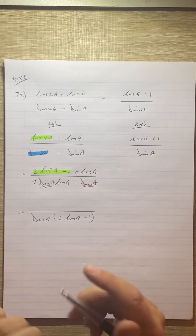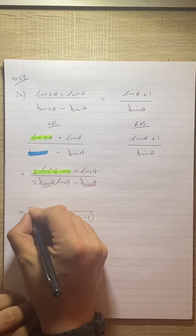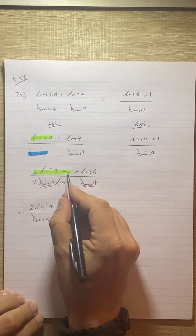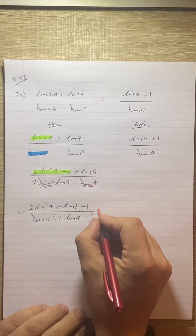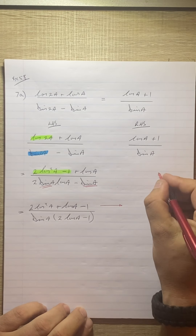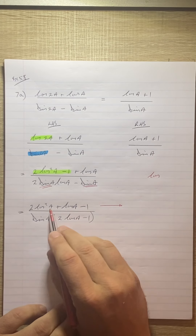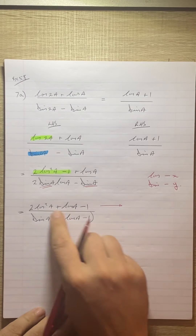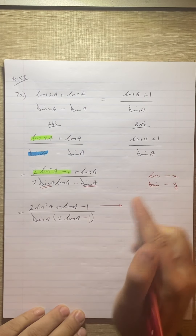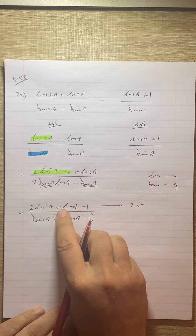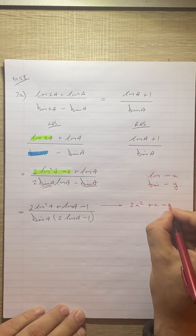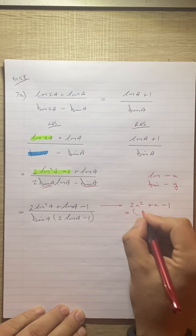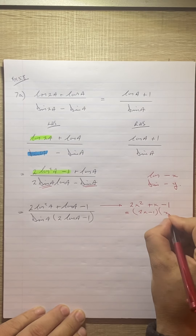I'm going to rearrange things — highest power of cos down to lowest. So we get 2 cos squared a plus cos a minus 1. When I get something like this, I like to use a little substitution: wherever I see cos I make it x, wherever I see sin I make it y. So this becomes 2x squared plus x minus 1, and you can clearly see that's a trinomial which factorises to (2x minus 1)(x plus 1).